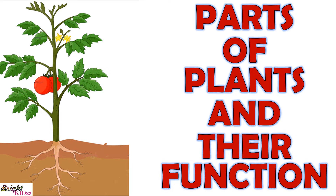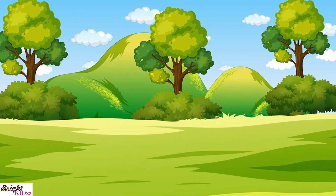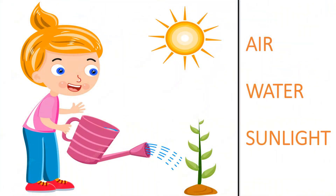Let's learn parts of plants and their functions. We are surrounded by various types of plants around us. Plants are one of the most vital and essential components of our environment. Like human beings, plants also need air, water, and sunlight to live.